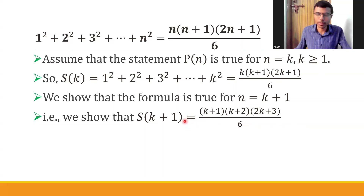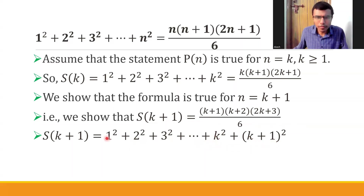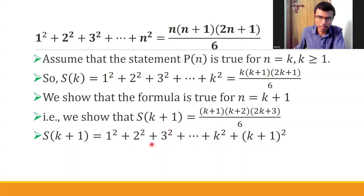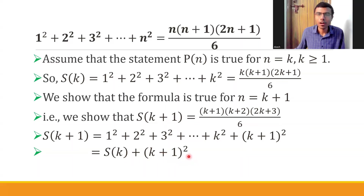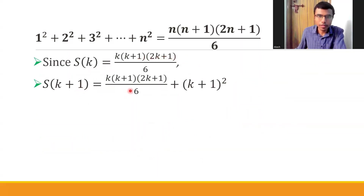By definition, S of n = 1² + 2² + 3² + ... + n², so S(k+1) = 1² + 2² + ... + k² + (k+1)². The last-but-one term is k². Now 1² + 2² + ... + k² is S of k. So S(k+1) = S(k) + (k+1)². Since S(k) = k(k+1)(2k+1)/6, we substitute that here.